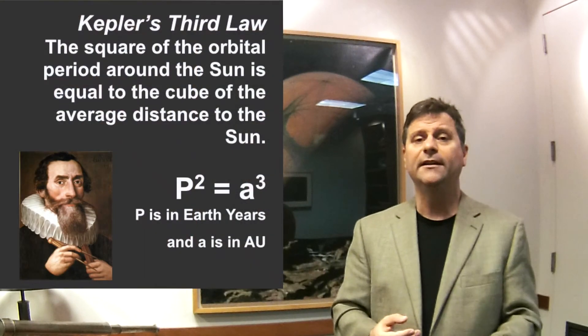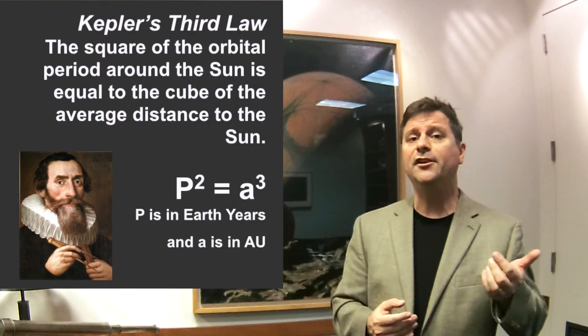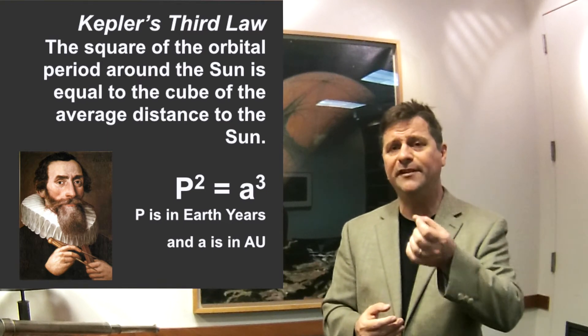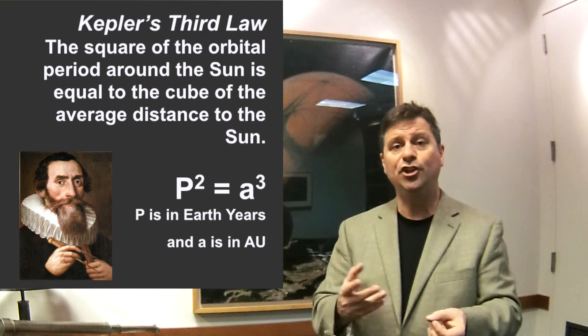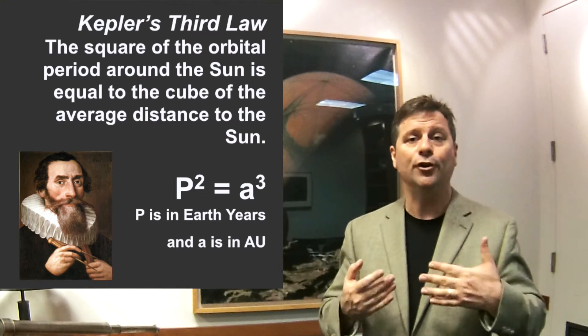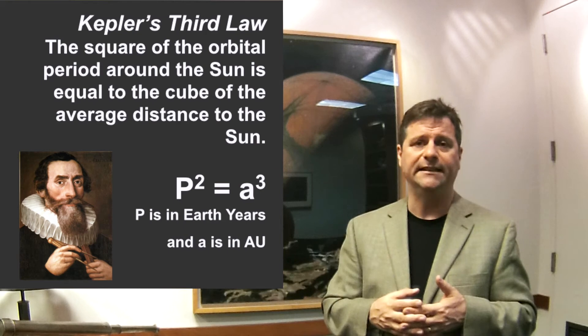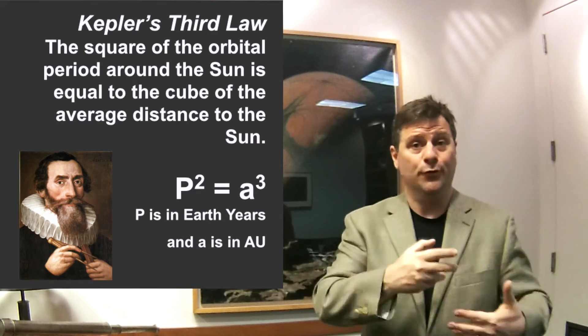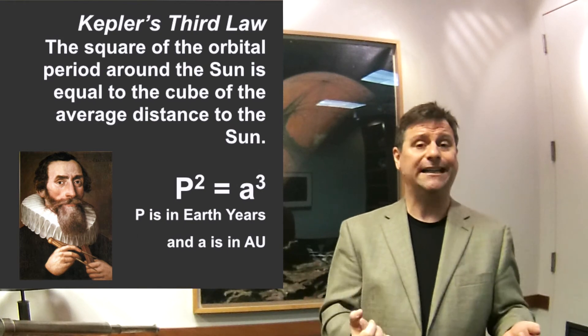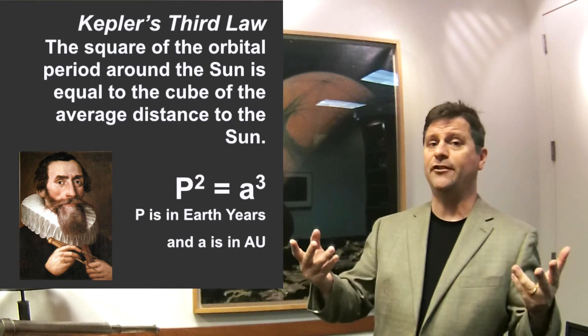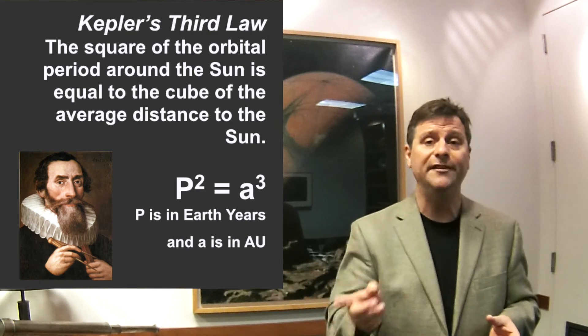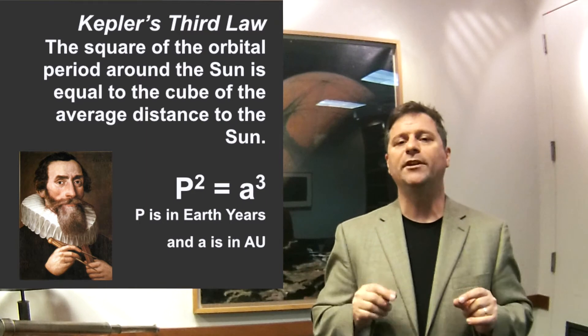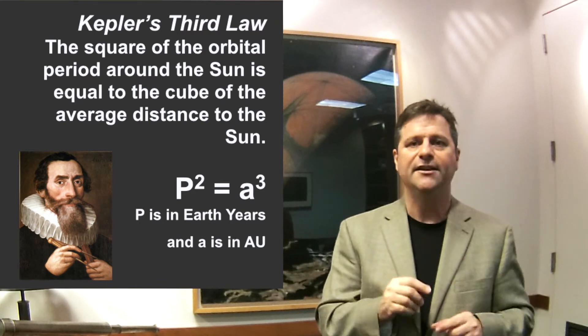So the period of the orbit, in terms of Earth years, squared, is the same as the average of the distance between the planet and the sun, cubed, if that average distance is relative to Earth distances from the Earth to the sun. So now we've got this thing, which is really fascinating. It's called the harmonic law, and it's sometimes just written P squared equals A cubed, where P is the period of the orbit around, and A is the semi-major axis of the orbit of the planet around the sun.